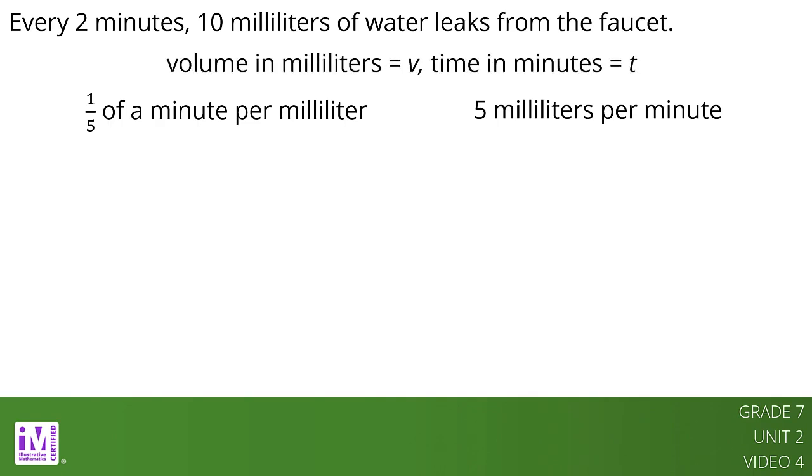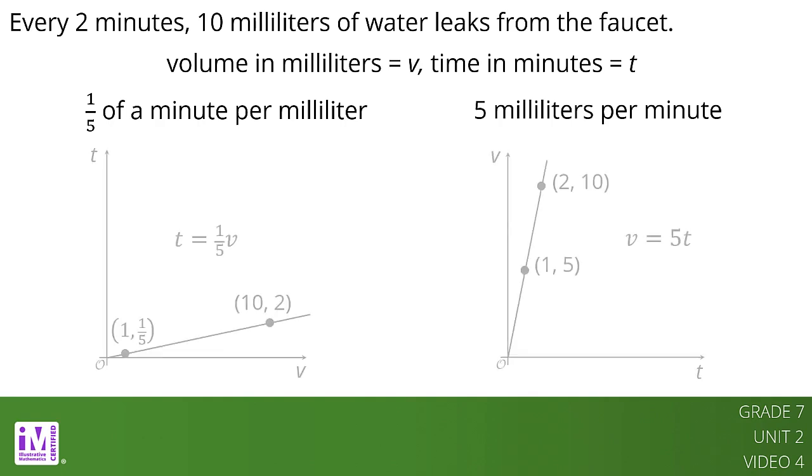Let's use v to represent volume in mL and t to represent time in minutes. Here are the graphs and equations that represent both ways of thinking about this relationship. Even though the relationship between time and volume is the same, we are making a different choice in each case about which variable to view as the independent variable. The graph on the left has v as the independent variable and the graph on the right has t as the independent variable.